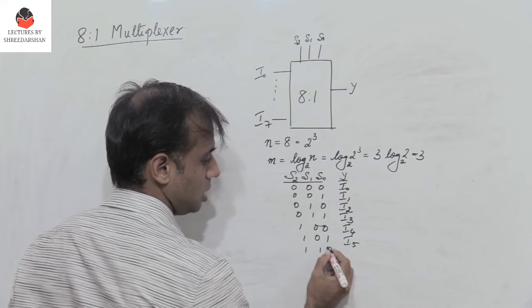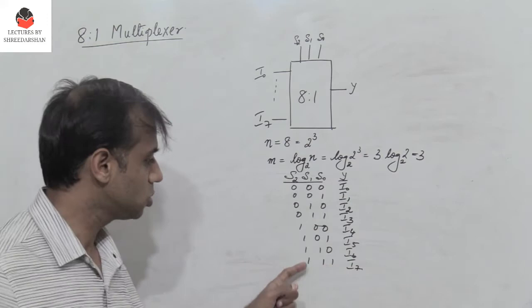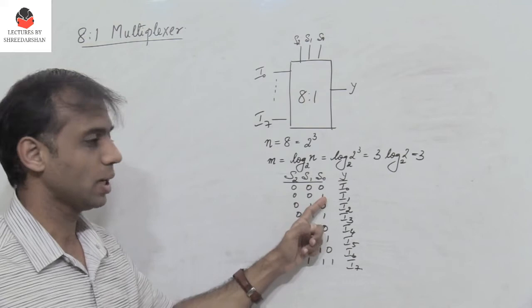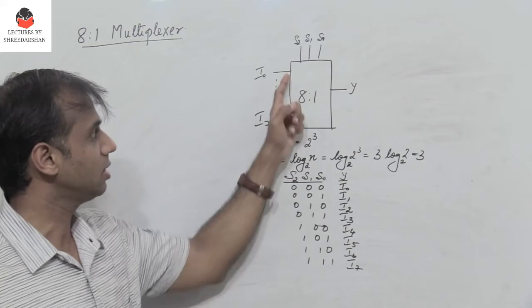What does this truth table mean? When the select lines are 0,0,0, i0 appears at the output — i0 can be 0 or 1, and that appears at the output. When it is 0,0,1, i1 appears at the output, and so on. And when the select lines are 1,1,1, i7 appears at the output.